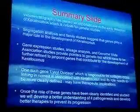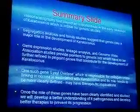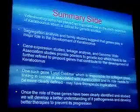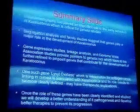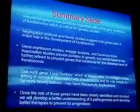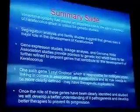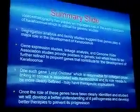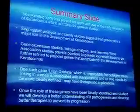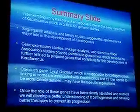In summary, videokeratography has played an important role in the early detection of keratoconus, which is critical for genetic studies. Segregation analysis in families has suggested genes play a major role in the development of keratoconus. Gene expression studies, linkage analysis, and genome-wide association studies have provided points to genetic loci which need to be further refined. One such gene, lysyl oxidase, which is responsible for collagen cross-linking in the cornea, is associated with keratoconus and its role needs to be more clearly defined — it may have therapeutic implications. Once the role of these genes is clearly defined, we will develop a better understanding of pathogenesis and better therapies to prevent disease progression. Thank you very much, and I want to thank the organizers for inviting me. I'm honored and humbled.